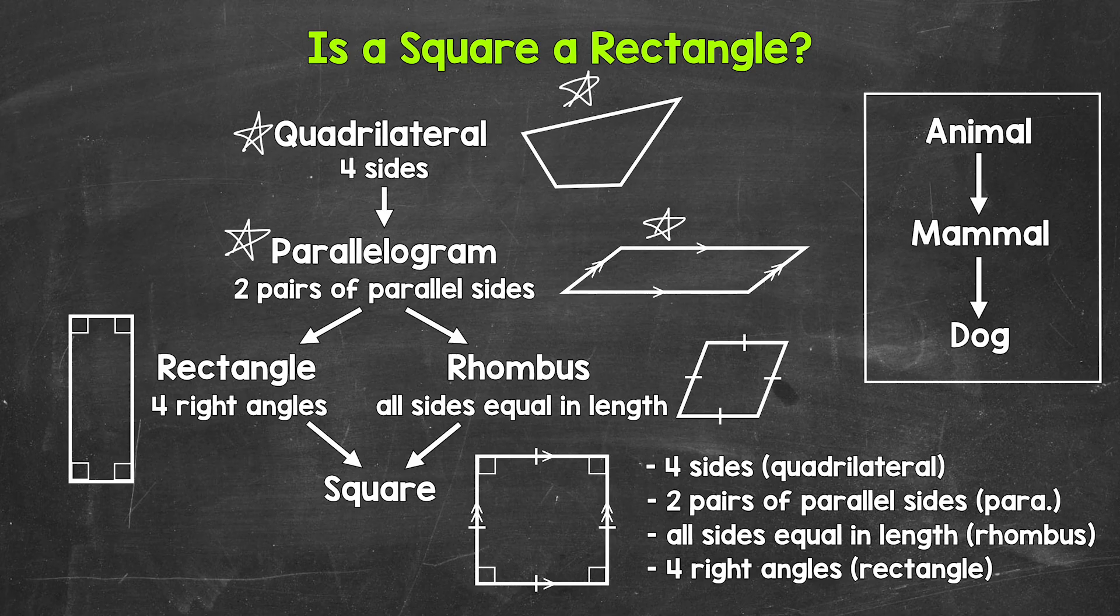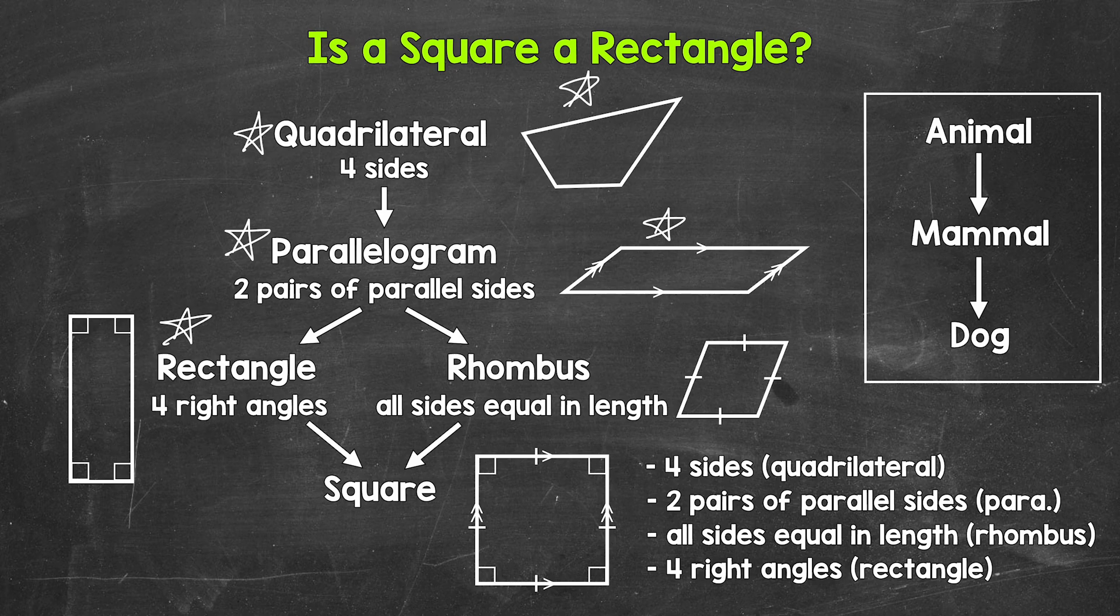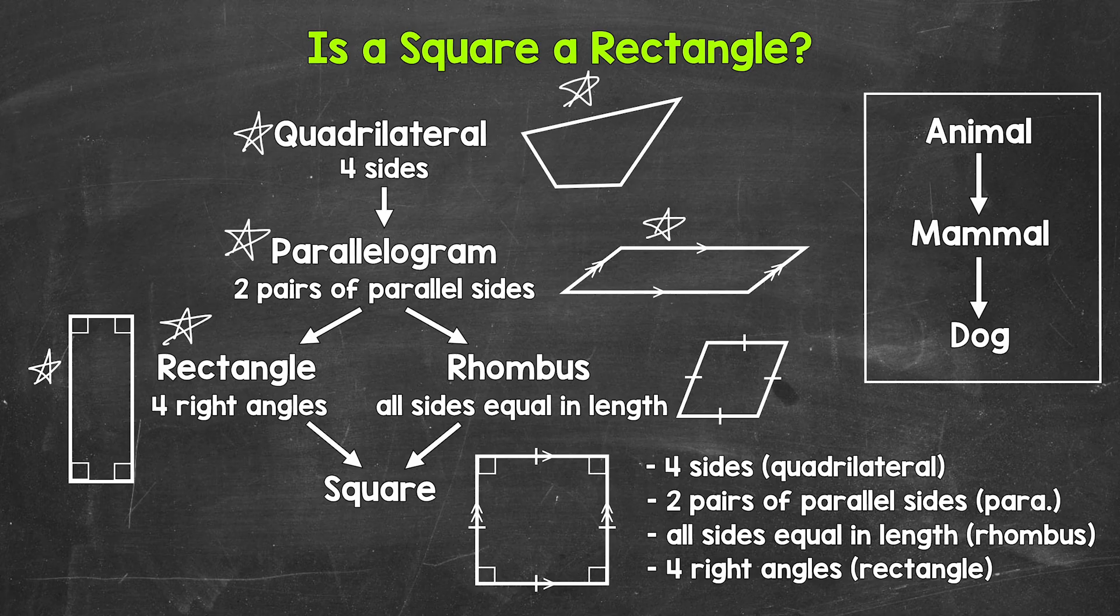There are two different paths we can take to get more specific here. Let's go to the left over to rectangle. Now rectangles are quadrilaterals. Rectangles have four sides. And rectangles are parallelograms. Rectangles have two pairs of parallel sides. But more specifically, a rectangle has to have four right angles. We have an example of a rectangle right here. So rectangles are just a more specific or special quadrilateral and parallelogram.